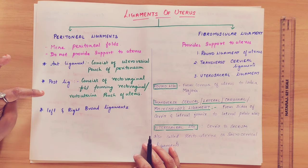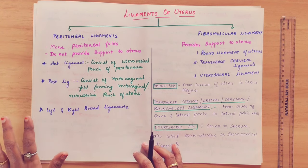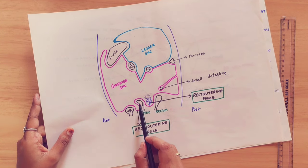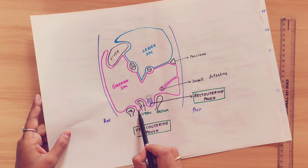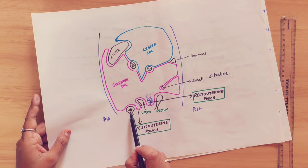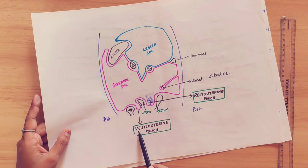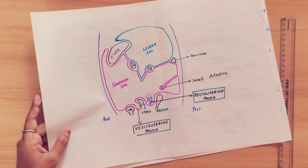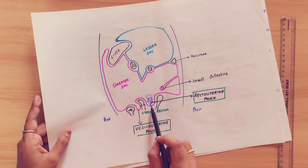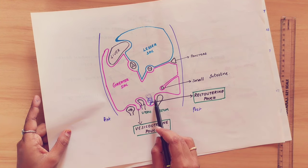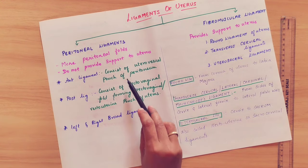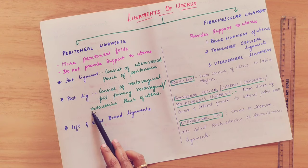The three types of peritoneal ligaments are: anterior ligament, posterior ligament, and left and right broad ligaments. The anterior ligament is associated with the vesico-uterine pouch (also called utero-vesical pouch), which lies on the anterior surface of the uterus near the urinary bladder. The posterior ligament is associated with the recto-uterine pouch.